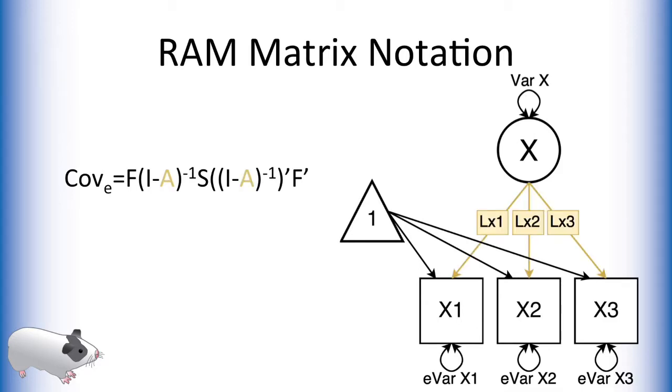The first matrix, A, is a square matrix. This matrix represents the asymmetric arrows in the model. In this case, the factor loadings going from X to X1, X2, and X3.